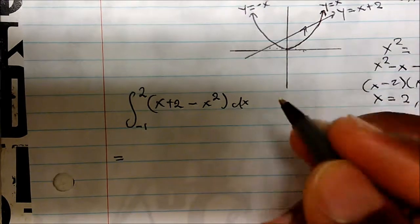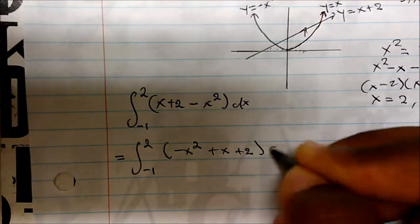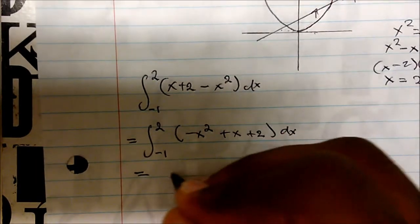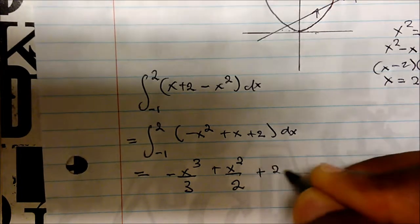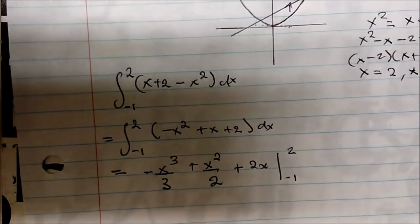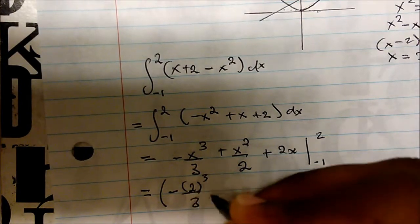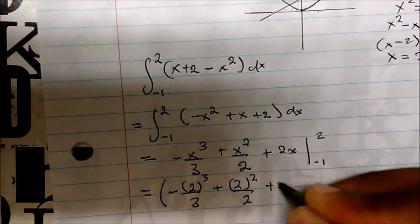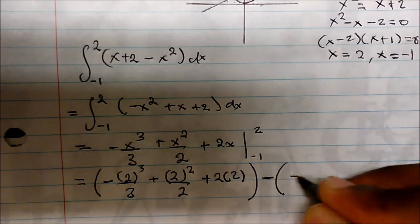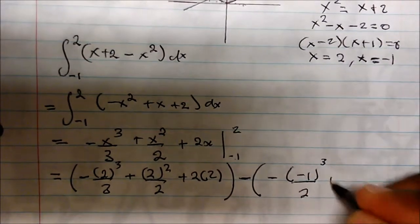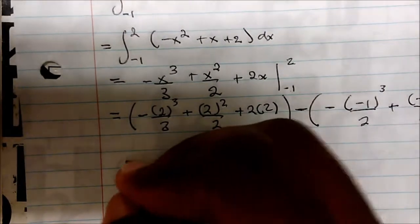This simplifies to the integral from −1 to 2 of (−x² + x + 2) dx. Taking the antiderivative gives −x³/3 + x²/2 + 2x, evaluated from −1 to 2. Plugging in the upper limit first: −(2³)/3 + (2²)/2 + 2(2), and then subtracting the expression evaluated at −1: −(−1)³/3 + (−1)²/2 + 2(−1).